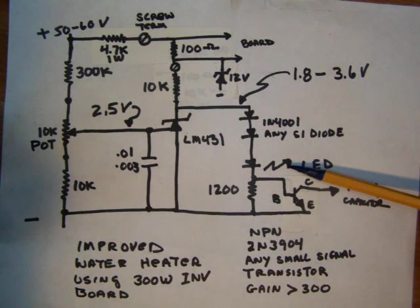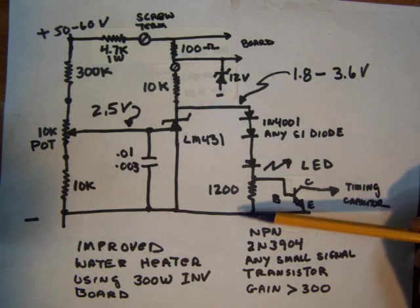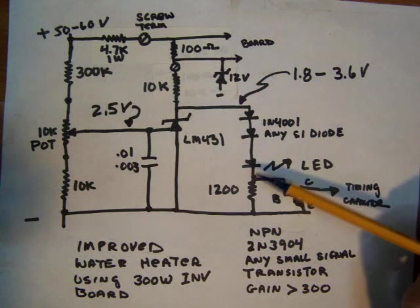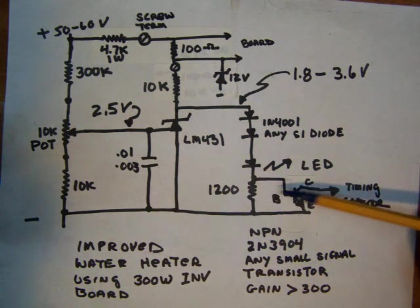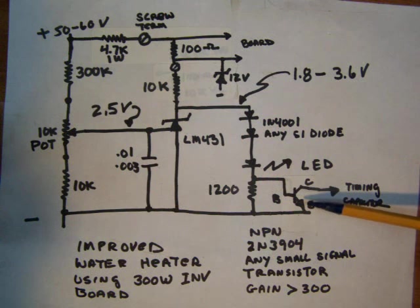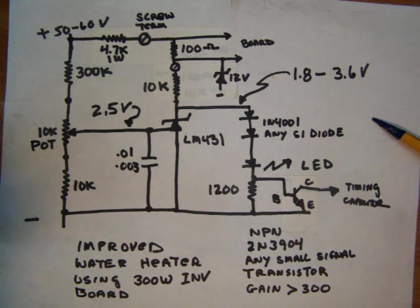This is the existing LED - this existing LED normally goes to a common and we have to cut the trace. Then we bridge a resistor across that and we drive the base of this transistor. The collector just goes off to the timing capacitor and shorts that out if the voltage is too low.